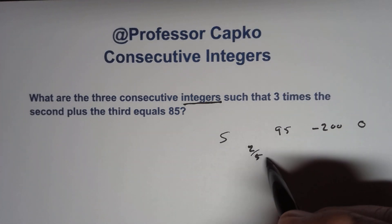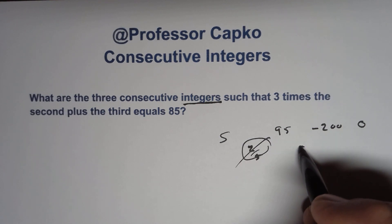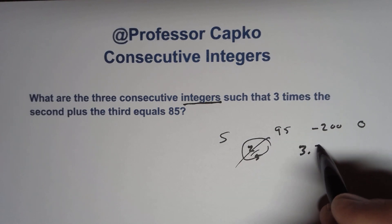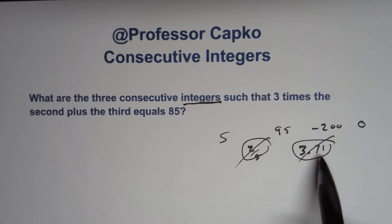2 fifths is not an integer. 3.71 is not an integer because these are fractions. Mixed numbers wouldn't count either. And this has a decimal.